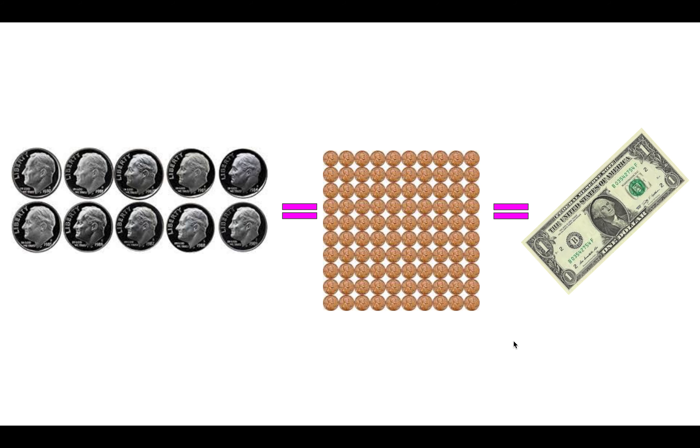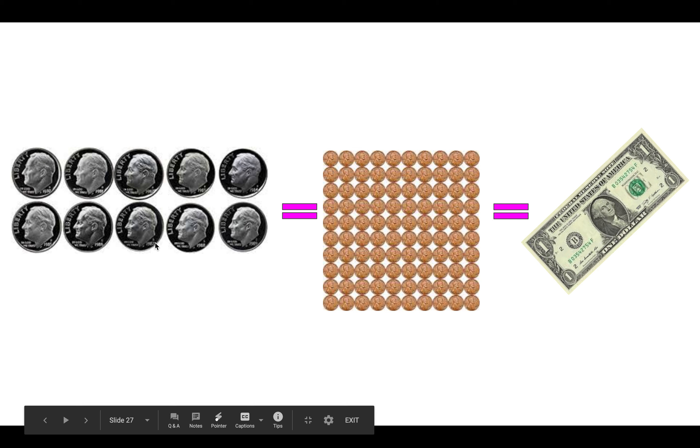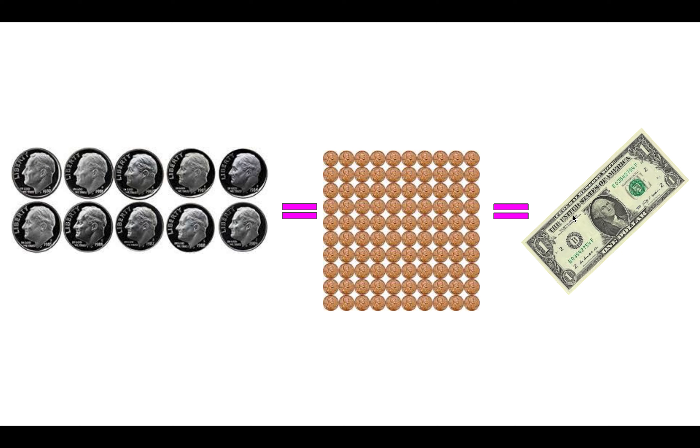So when we talk about money, we know that we can use ten dimes, or one hundred pennies, to make a dollar. So this is one tenth. It's one of ten dimes. This is one tenth of the pennies. It's one of ten rows of pennies. So we can call it one tenth, or one tenth. Same thing.